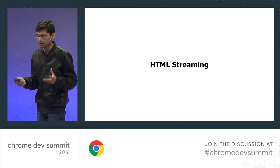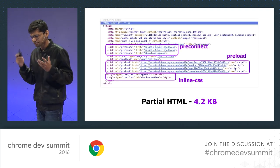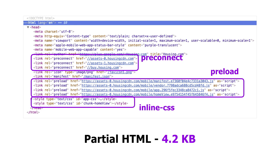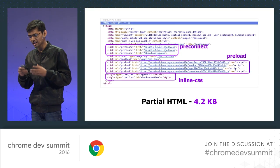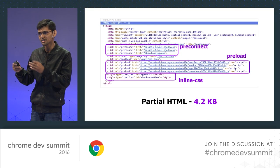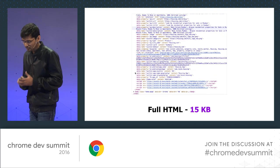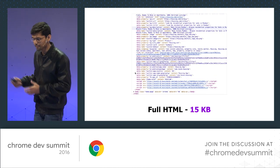So let's talk about HTML streaming. On the client side, we send an initial chunk that only contains the code that needs no computation. You can see there's preconnect, preload, and the critical inline CSS. By sending the preload, we actually start the request for critical JavaScript earlier.